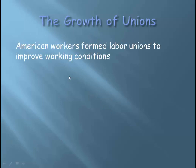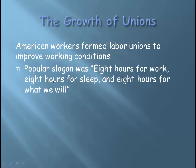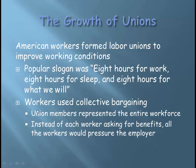Workers needed a voice of their own, so they developed labor unions. American workers formed different labor unions to improve their working conditions. A popular slogan for these early labor unions was 'eight hours to work, eight hours to sleep, and eight hours for what we will.' Workers also used something known as collective bargaining — union members would represent the entire workforce. Instead of 2,000 workers storming into the boss's office, they would elect union members who would negotiate for everybody, pressuring the employer to do something for everyone.